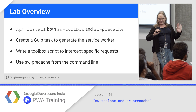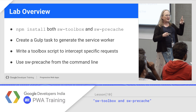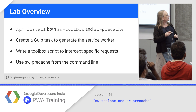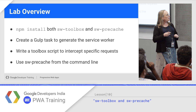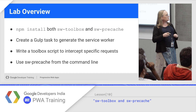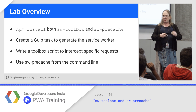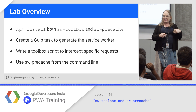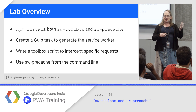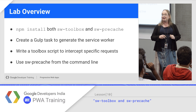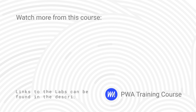Now for the lab — three lectures, one lab. Install Toolbox and precache, set up Gulp, go write a Toolbox script to grab specific requests. Do some different caching based on paths, customize it, and then use precaching from the command line.